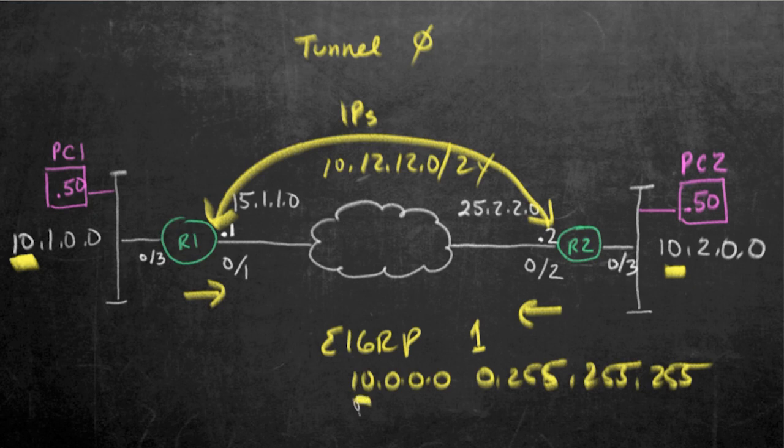That 10 will do a couple things for us. One, it'll include these networks over here at Site 1 and Site 2. It'll also include the interface, the GRE tunnel interface that starts with 10, so we want to have that enabled so they'll be able to talk with each other.